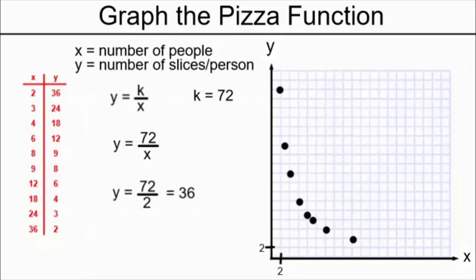Eighteen people would get four slices each. Twenty-four people would get three slices each. And 36 people would get a measly little tiny share of two slices each. That's not enough.